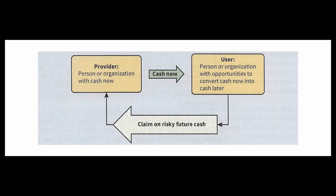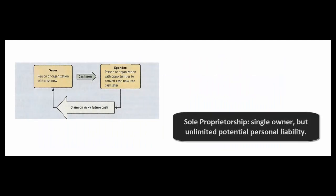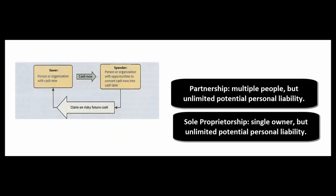Big picture: in the financial environment there are providers and users — I like to think of them as savers and spenders. Those spenders might be a sole proprietorship, a business owned by one person, or a partnership, a business owned by several people. But the problem with those is the notion of unlimited personal liability.